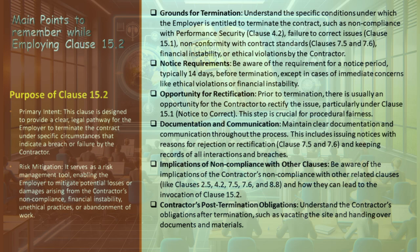Grounds for Termination: It is crucial to understand the specific conditions that warrant termination, including non-compliance with performance security (Clause 4.2), failure to rectify issues as per Clause 15.1, non-conformity with contract standards (Clauses 7.5 and 7.6), financial instability, or ethical violations by the contractor. Notice Requirements: Be cognizant of the need for a notice period, typically 14 days, prior to contract termination. This requirement is waived in cases of immediate concerns like ethical violations or financial instability. Opportunity for Rectification: There is usually a provision for the contractor to correct the issue, especially under Clause 15.1, which is integral for ensuring procedural fairness.